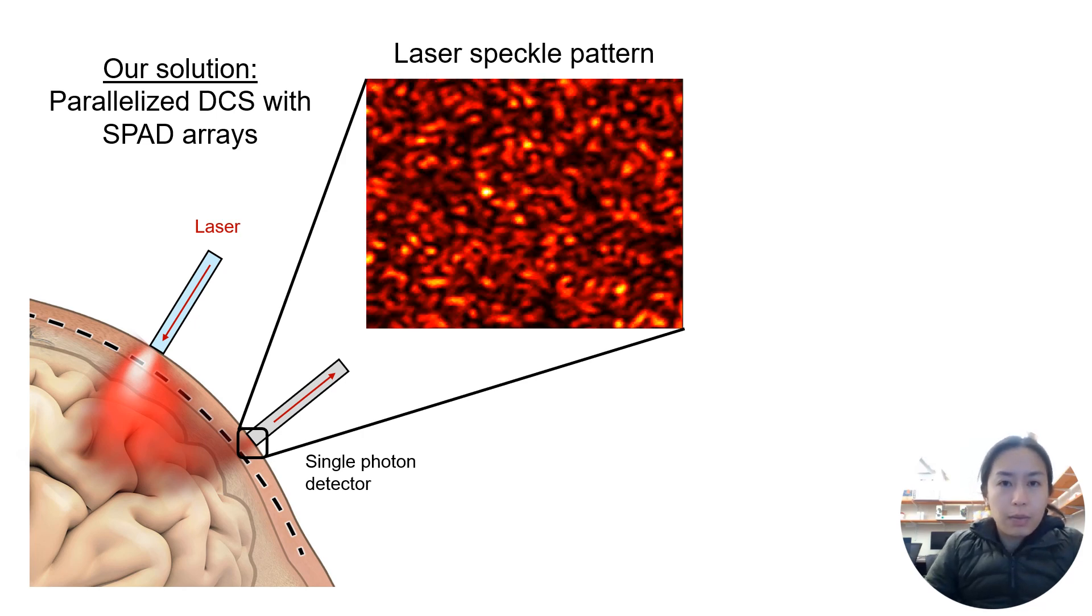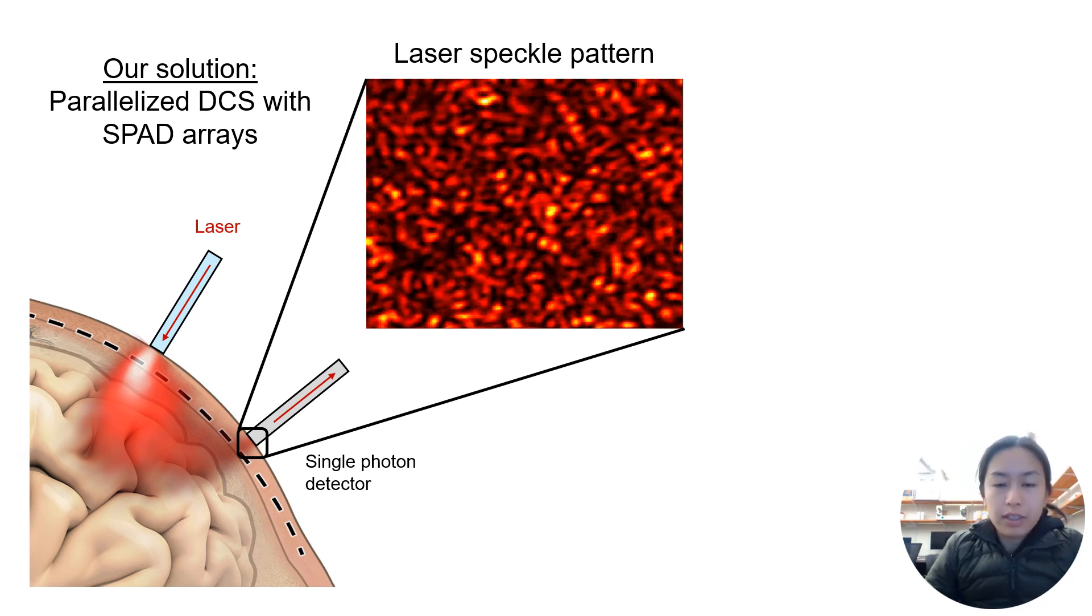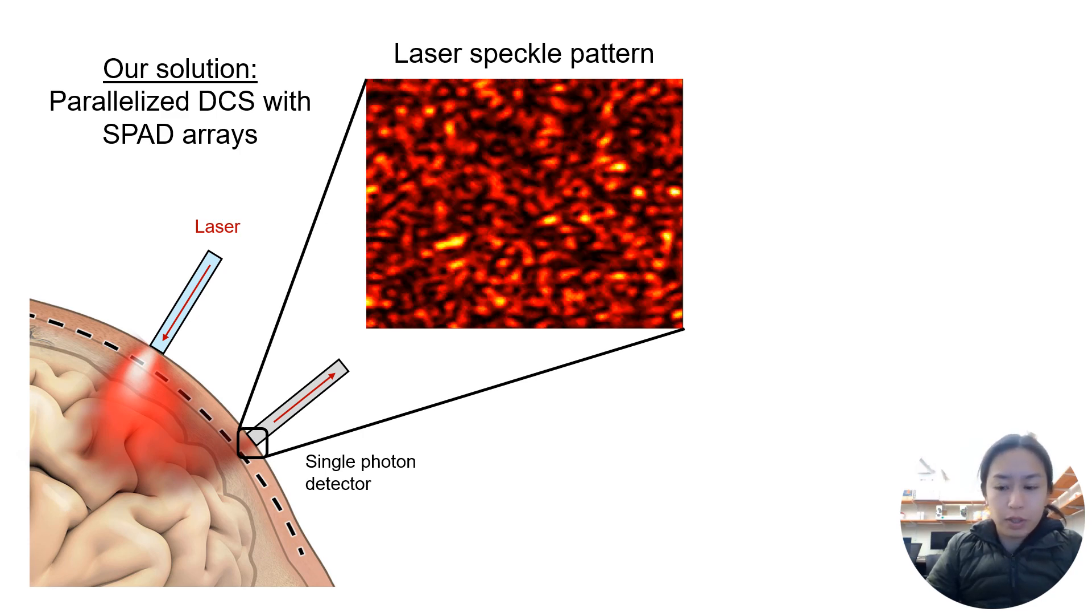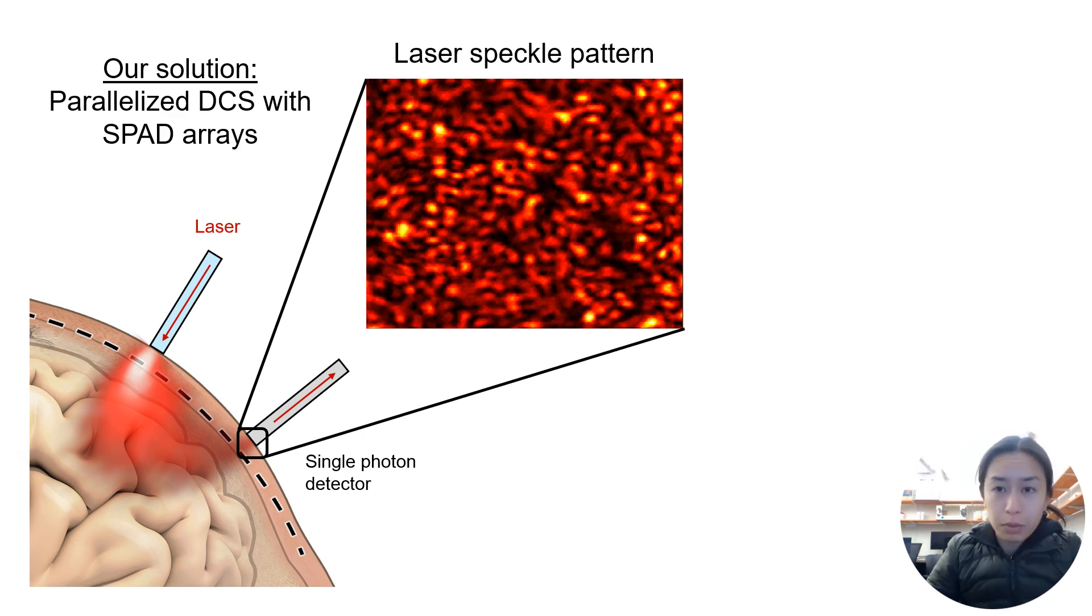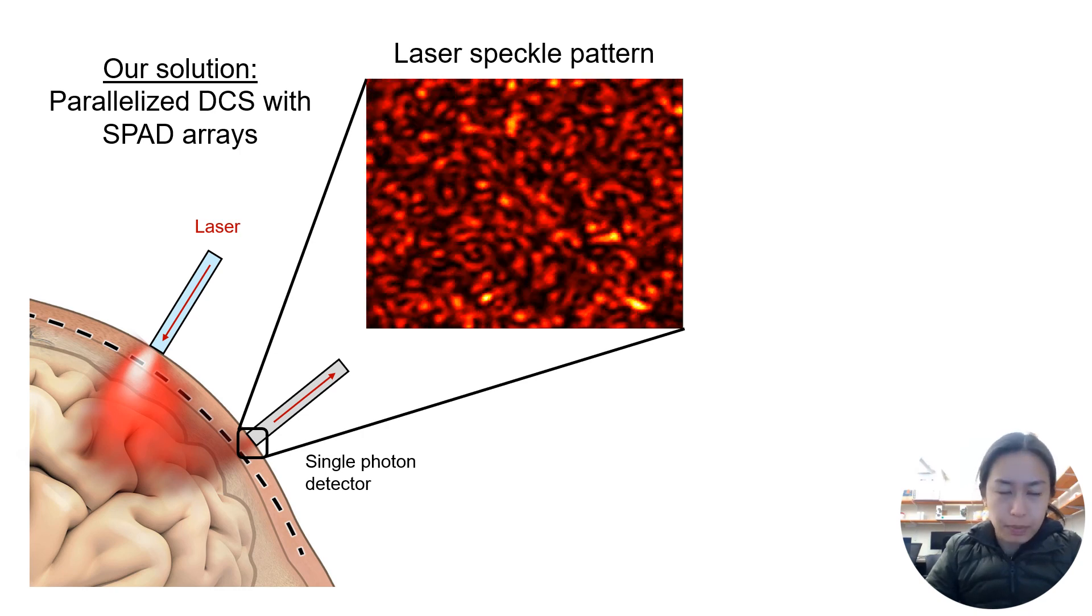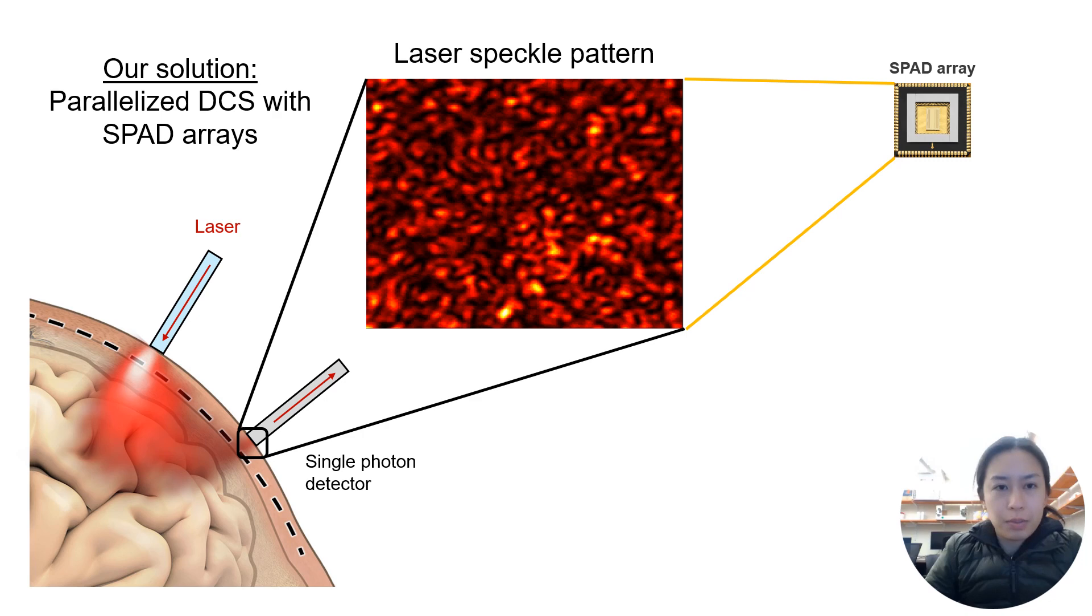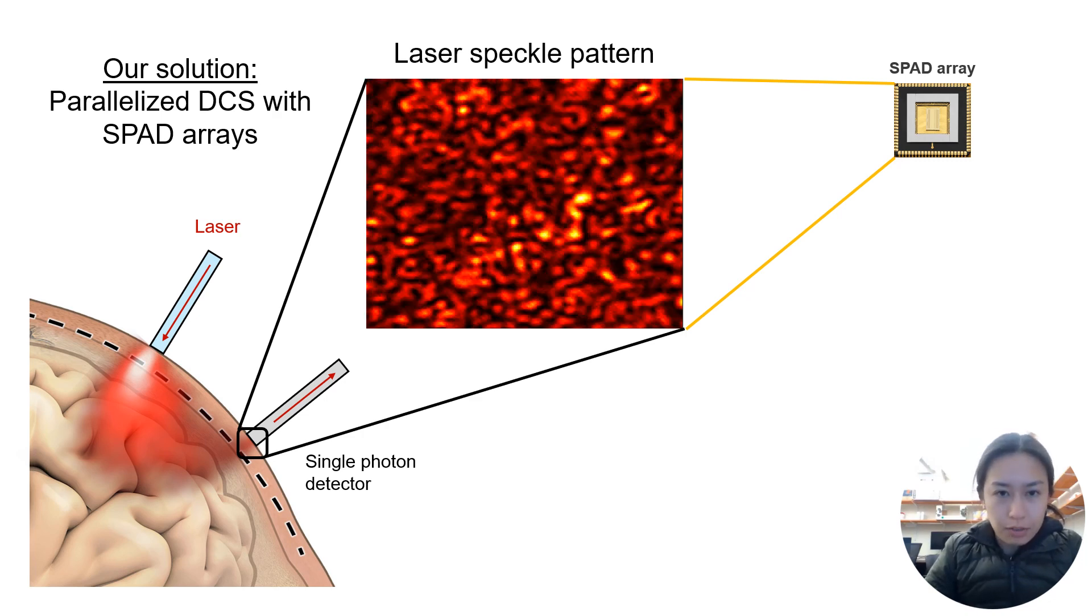Our solution to this in our lab is parallelized DCS with SPAD arrays. Here, instead of sampling several speckles individually with single-mode fibers, we collect light with a multi-mode fiber and project the laser speckle pattern onto the detector array.